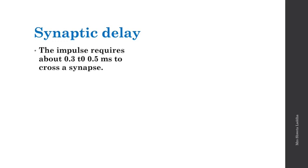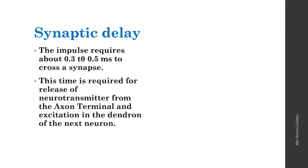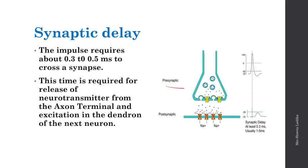Synaptic delay: an impulse requires about 0.3 to 0.5 milliseconds to cross a synapse. This time is required for the release of a neurotransmitter from the axon terminal and excitation in the dendron of the next neuron. The neurotransmitters are released from the presynaptic knob (axon terminal) and excite the postsynaptic dendron or muscle. The time taken for the impulse to travel from the axon terminal to the dendron — about 0.3 to 0.5 milliseconds — is called synaptic delay.